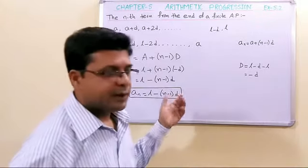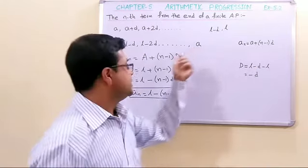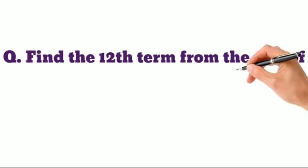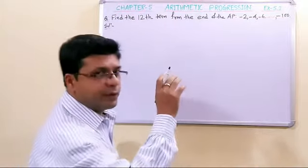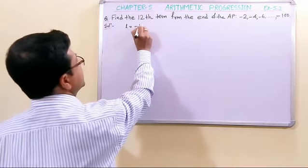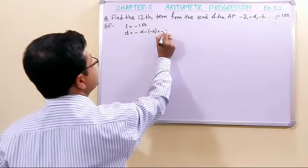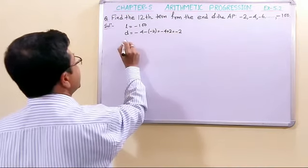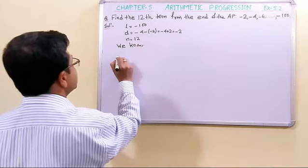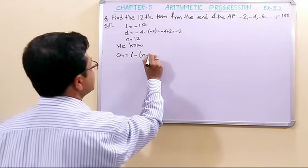Now let us do a sum using this formula. Even if you forget this formula, we can use the concept of reversing the AP — we will see both methods. The question is: find the 12th term from the end of the AP: -2, -4, -6, ..., -100. The formula for the nth term from the end is: aₙ = l - (n-1)d.